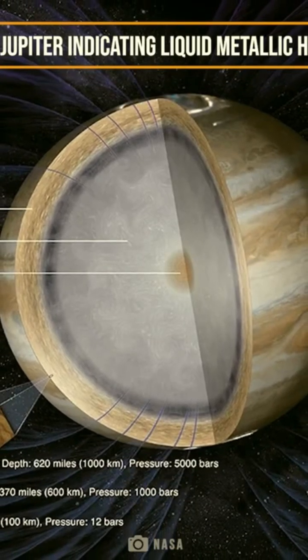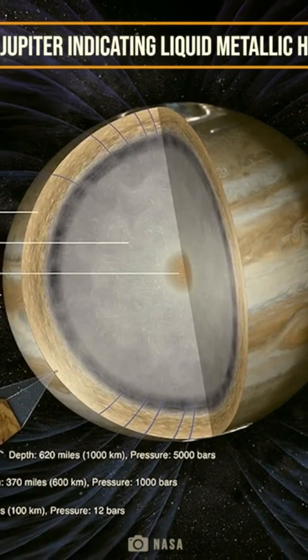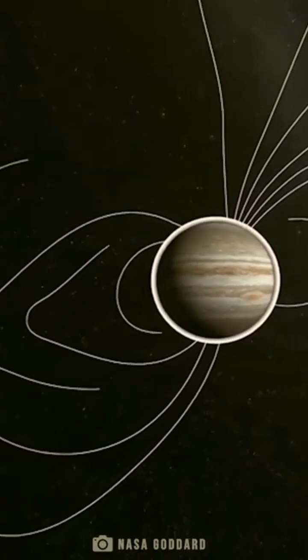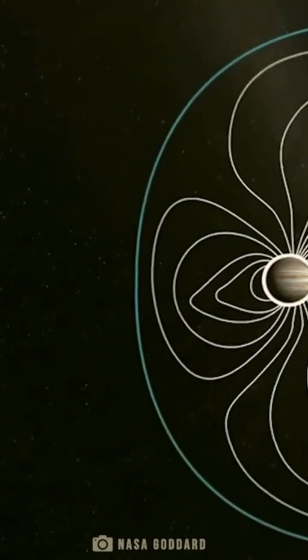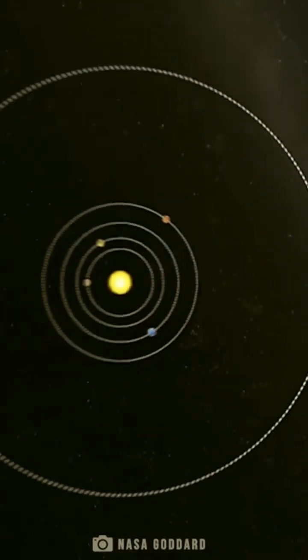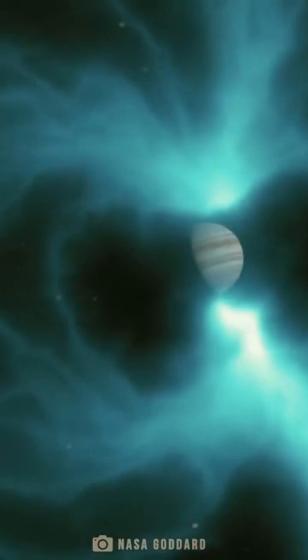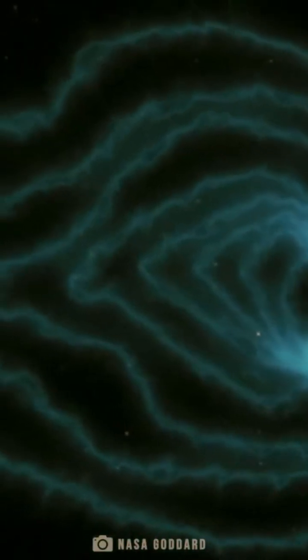Hydrogen outer core gives rise to its humongous magnetosphere. Jupiter's magnetosphere extends as far out as Saturn's orbit in some places. Jupiter's magnetic field is 20 times that of the Earth's.